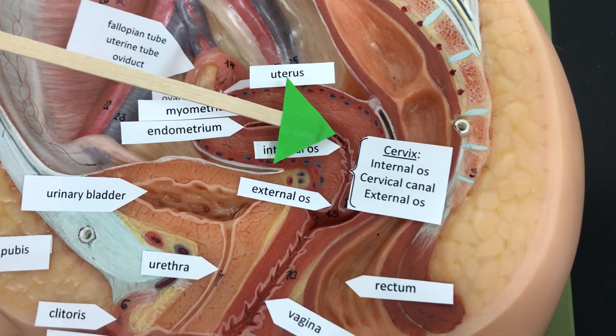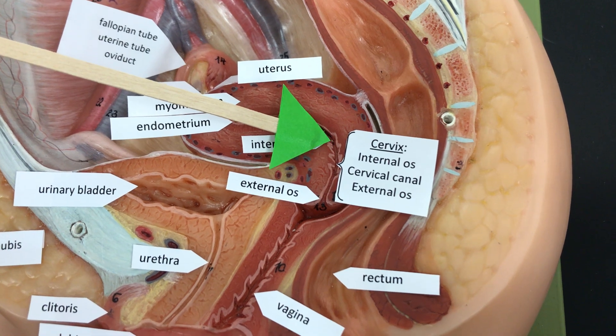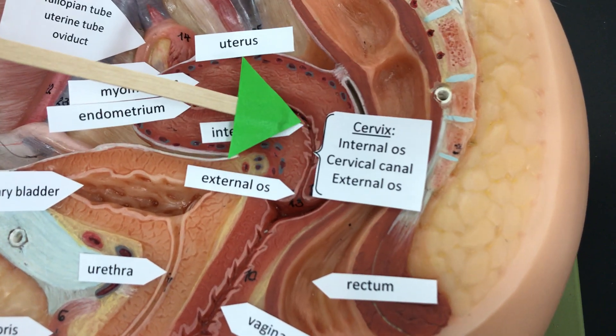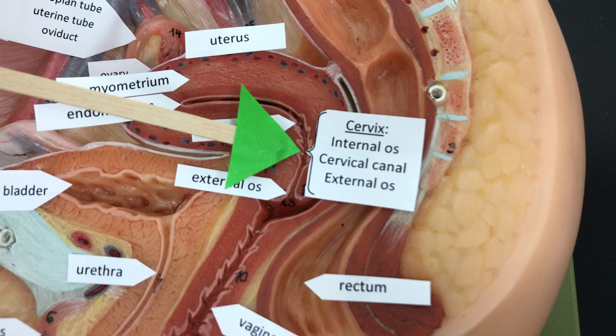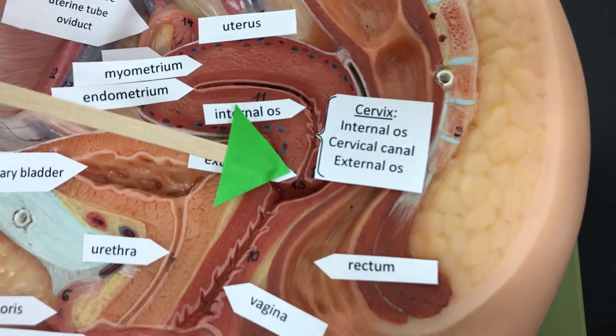The cervix has the internal os — that's the superior opening of the uterus — the cervical canal, and then the external os.